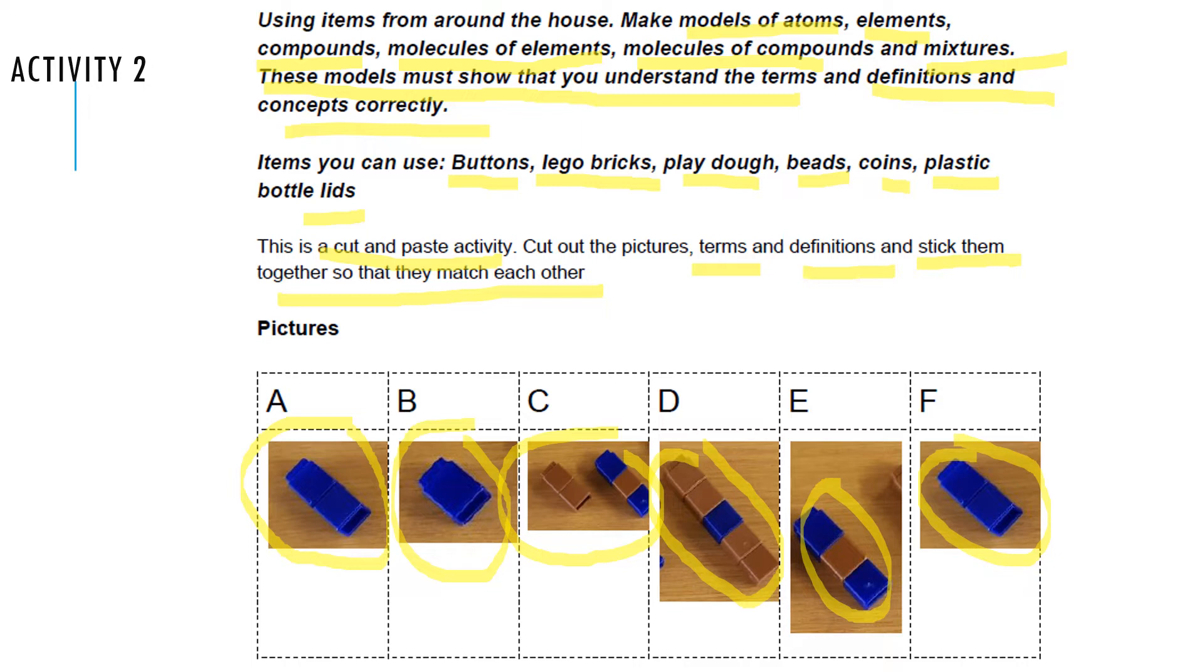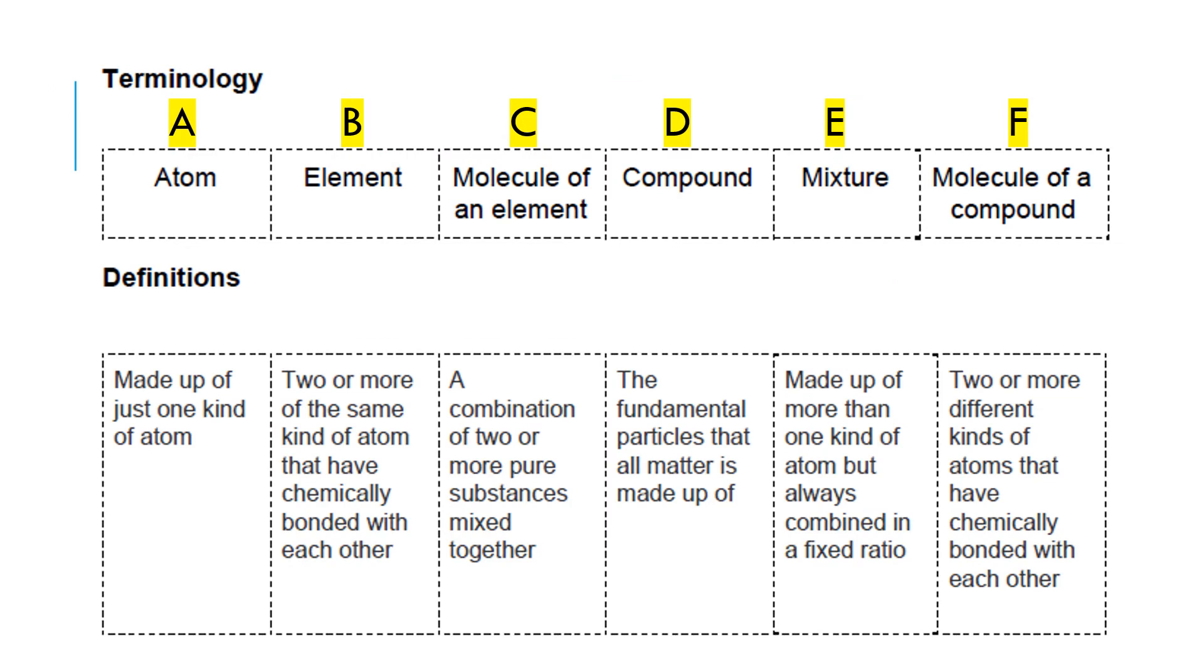You will do this based on the next slide. Look at the next slide. You can see A serves as an atom, B as an element, C as molecule of an element, D as compound, E as mixture, and F as molecule of compound. Take note, if what is shown in picture letter A says 'Made up of just one kind of atom,' that means you will place only one. You will place one coin.